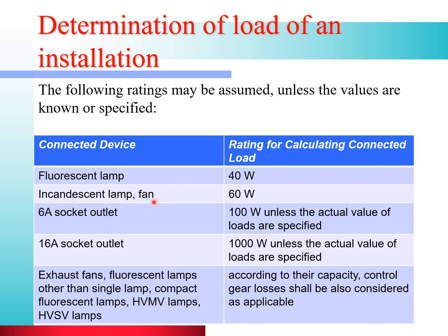The second device is the incandescent lamp and fan, with a rating of 60 W. For a 6-ampere socket outlet, the rating is taken as 100 W unless the actual value of the load is specified. For a 16-ampere socket outlet, 1000 W unless specified. Other devices listed include exhaust fan, fluorescent lamps other than single lamp, compact fluorescent lamp, HVMV lamp (high voltage mercury vapor) and HVSV lamp (high voltage sodium vapor). According to their capacity, control gear losses shall also be considered as applicable.